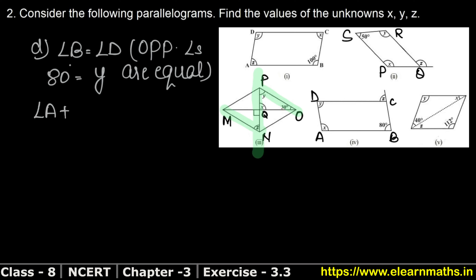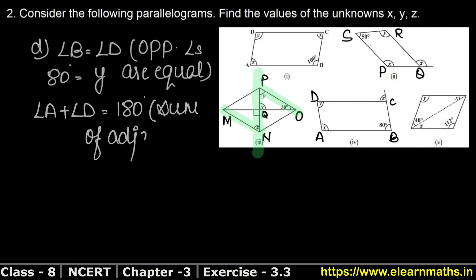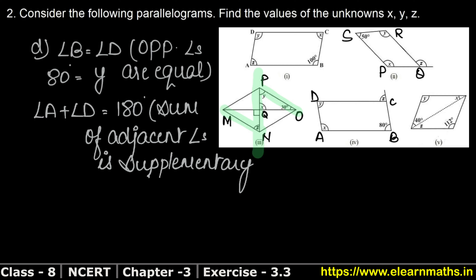Angle A plus angle D equals 180 degrees. Why? Because the sum of adjacent angles is supplementary — supplementary means 180 degrees.